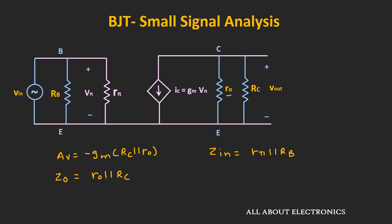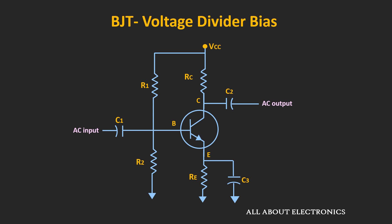This was the small signal analysis of the common emitter fixed bias configuration. Now let's do the small signal analysis for the common emitter voltage divider biasing configuration. Here, capacitors C1 and C2 are the coupling capacitors, while capacitor C3 is the bypass capacitor. For DC voltages, this bypass capacitor acts as an open circuit, while for the AC input signal it offers minimum resistance and we assume it acts as a short circuit.